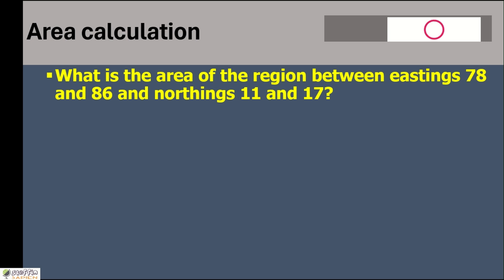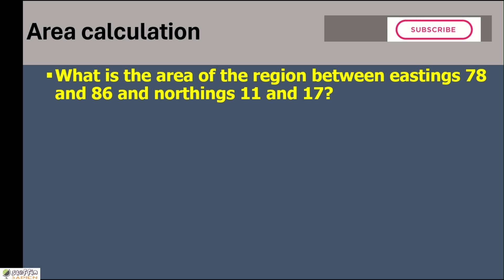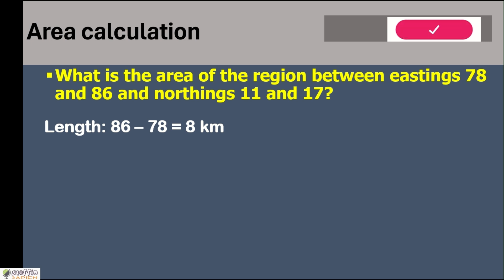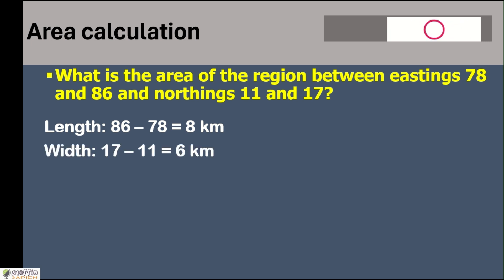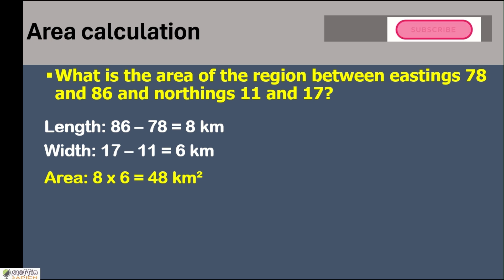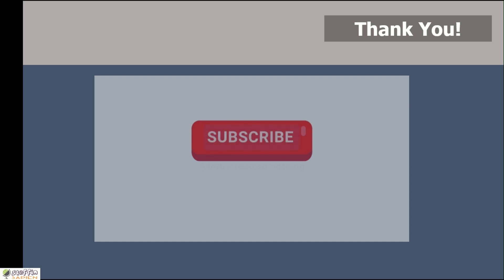One more example: what is the area of the region enclosed between eastings 78 and 86 and northings 11 and 17? We just need these numbers. The length is 86 − 78 = 8 kilometers, and the width is 6 kilometers. So the area is 8 × 6 = 48 square kilometers. Only rectangular or square regions will be asked in the board exam, so things are straightforward.